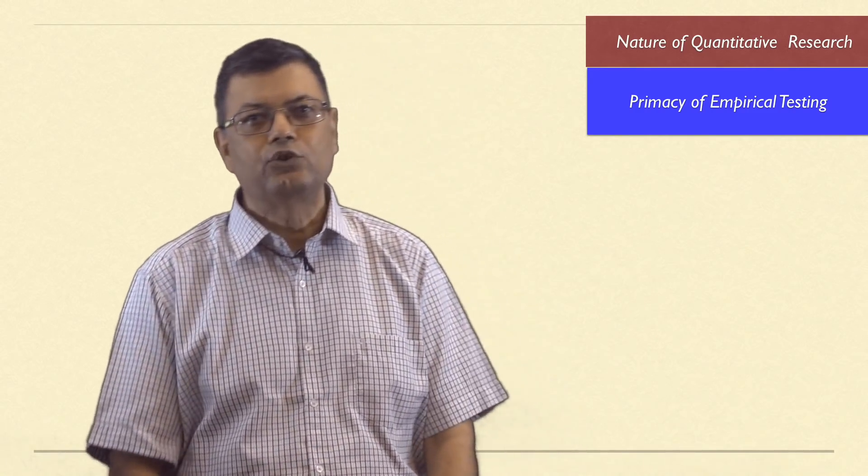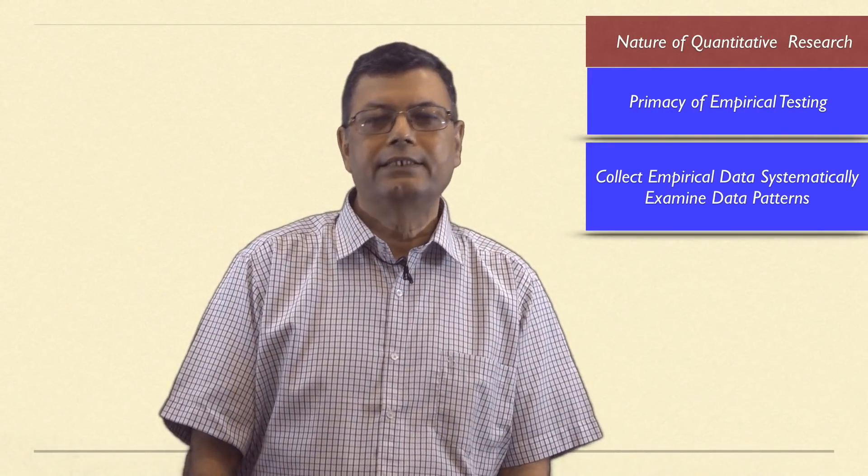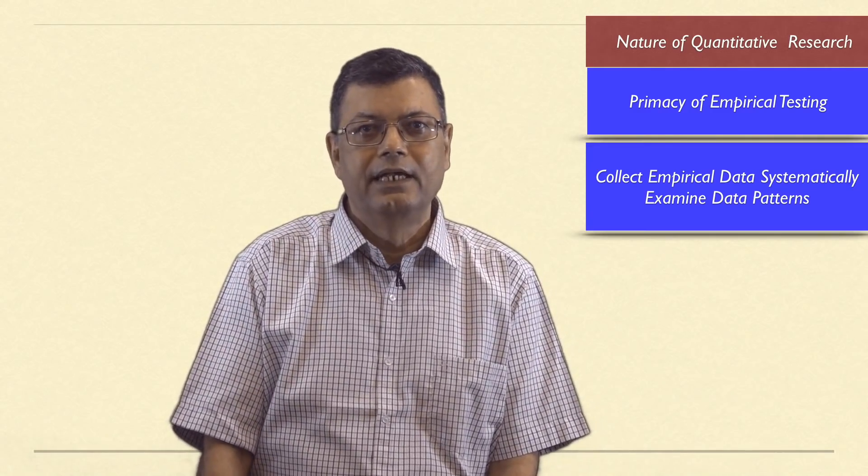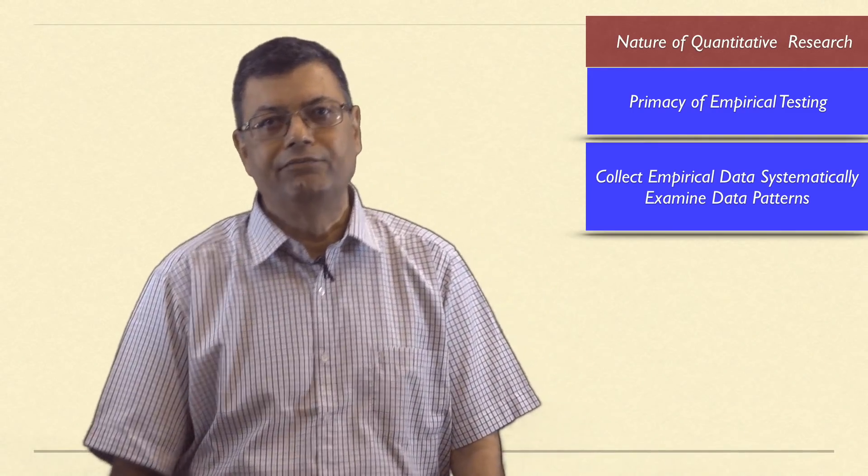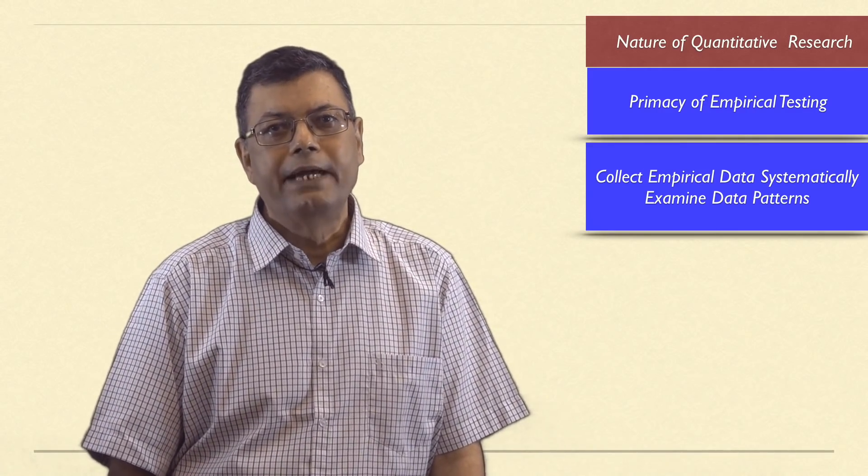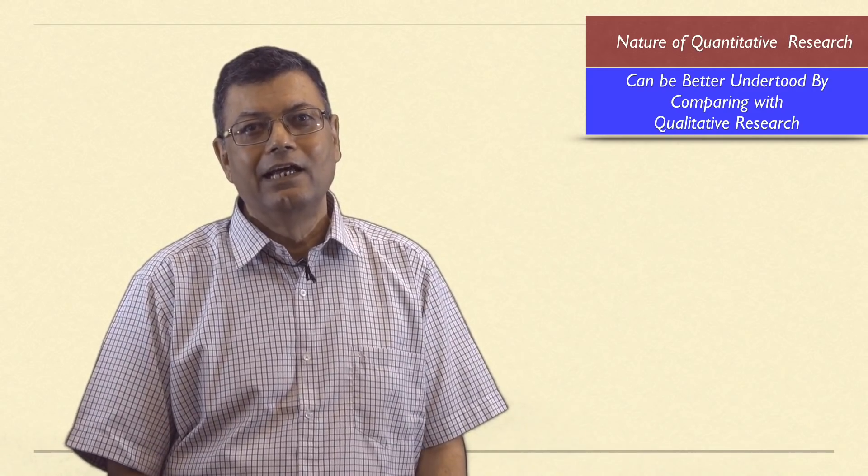If I have to summarize what I have said so far, it can be safely asserted that in all research, we strive to collect empirical data systematically and to examine data patterns so that we can better understand and explain social life. This can be accomplished by employing two different approaches, quantitative and qualitative. In my earlier lecture in this induction program, I explained qualitative research approach. Quantitative approach, in my opinion, can be better understood. Its focus can be better understood if we dwell a little on how they differ.